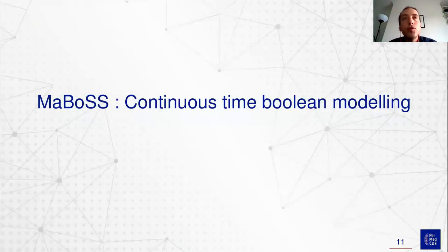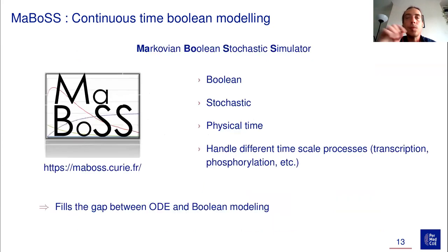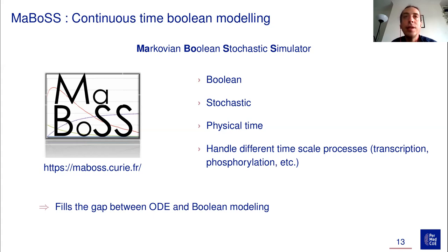MaBoSS is another type of framework that sits between quantitative and qualitative approaches — it is a continuous time Boolean modeling tool. It was introduced by Gautier, Laurence, Eric, and Emmanuel about ten years ago in a paper on continuous time Boolean modeling for biological signaling, as an application of the Gillespie algorithm. MaBoSS stands for Markovian Boolean Stochastic Simulator. It uses Boolean formulas and is stochastic, meaning multiple simulations won't always give the same results, and it handles physical time — a key difference from standard Boolean frameworks.